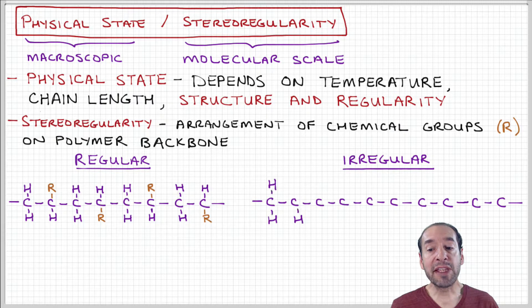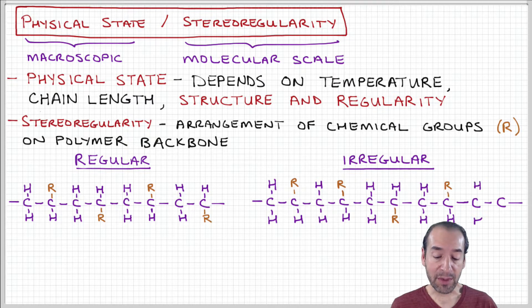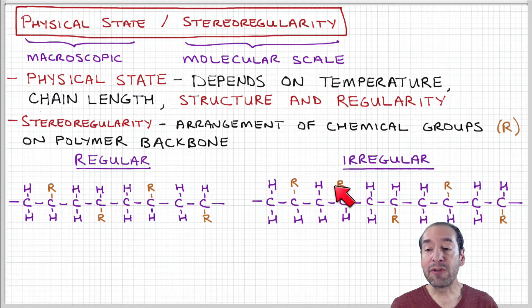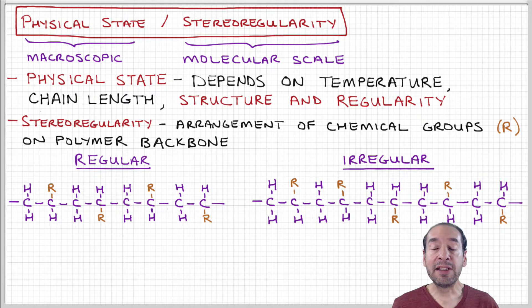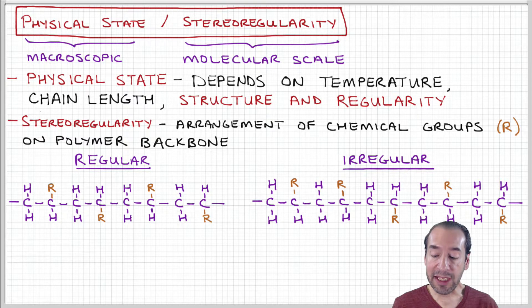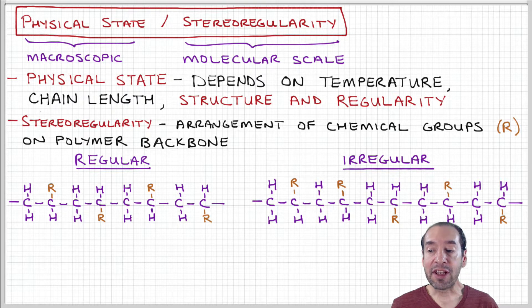But that doesn't always have to be the case. This side group could be arranged in a random fashion throughout the polymer backbone. It could be on top here for the first two repeat units, then on the bottom, then on the top, then on the bottom. And this could propagate throughout the length of the polymer chain.